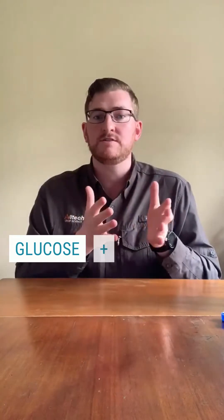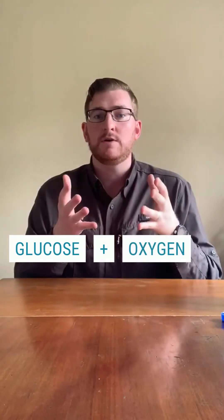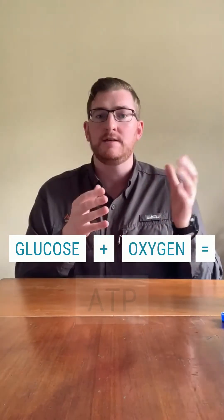So when we eat food, we digest the carbohydrates in that food and break it down into simple molecules such as glucose. Glucose enters the cells and it reacts with oxygen to produce ATP. ATP is this very important energy structure that we use for all of those energetic activities. We also produce CO2 in this reaction, and this CO2 is given off as a gas.